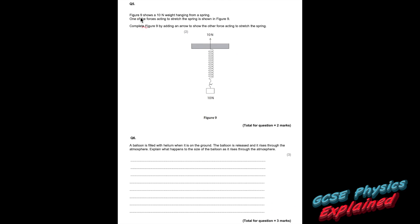Question 5. Figure 9 shows a 10 newton weight hanging from a spring. One of the forces acting to stretch the spring is shown. Complete the figure by adding an arrow to show the other force acting to stretch the spring. If you've got 10 newtons pulling upwards you must have a force of 10 newtons pulling down. Make sure the size of the arrow is about the same — try to make it exactly the same.